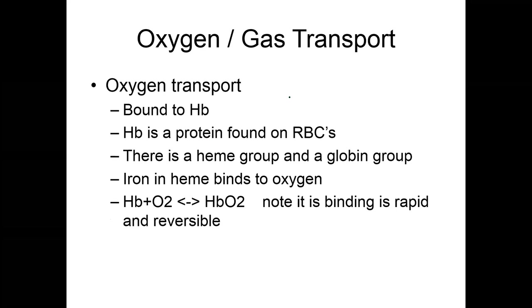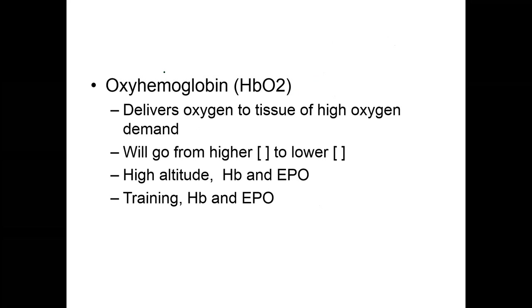Oxygen is bound to hemoglobin on red blood cells, which have four binding sites. As hemoglobin travels through the lungs, it gives up CO2 and picks up oxygen on the hemoglobin binding site. Oxyhemoglobin is the part of the hemoglobin that delivers oxygen to tissue. If oxygen is in high demand, it moves from a higher concentration to a lower concentration.